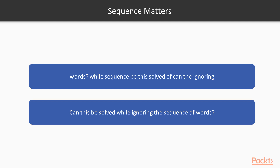So wherever there is a need for processing which requires sequence, that is where other neural networks like CNN fail and we need to use recurrent neural networks.